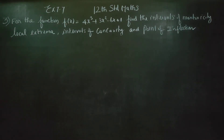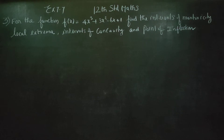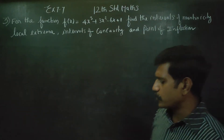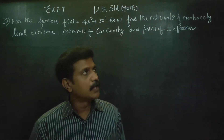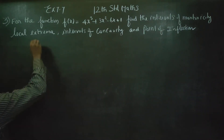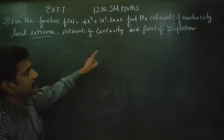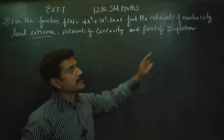Dear 12th standard students, I am Mitru Karanagaran. In exercise number 7.7, sum number 3, for the function f(x) = 4x³ + 3x² - 6x + 1, find the intervals of monotonicity, local extrema, intervals of concavity and point of inflection.